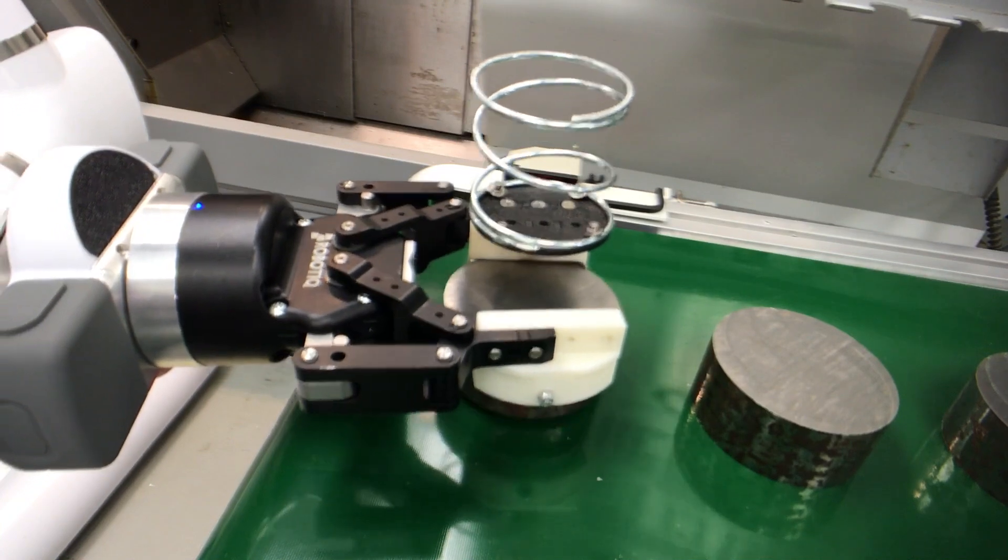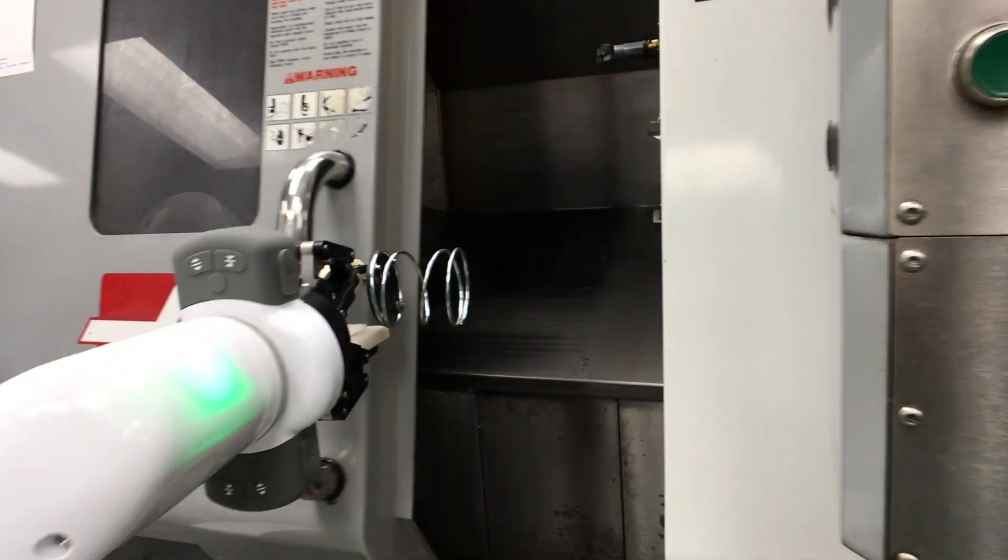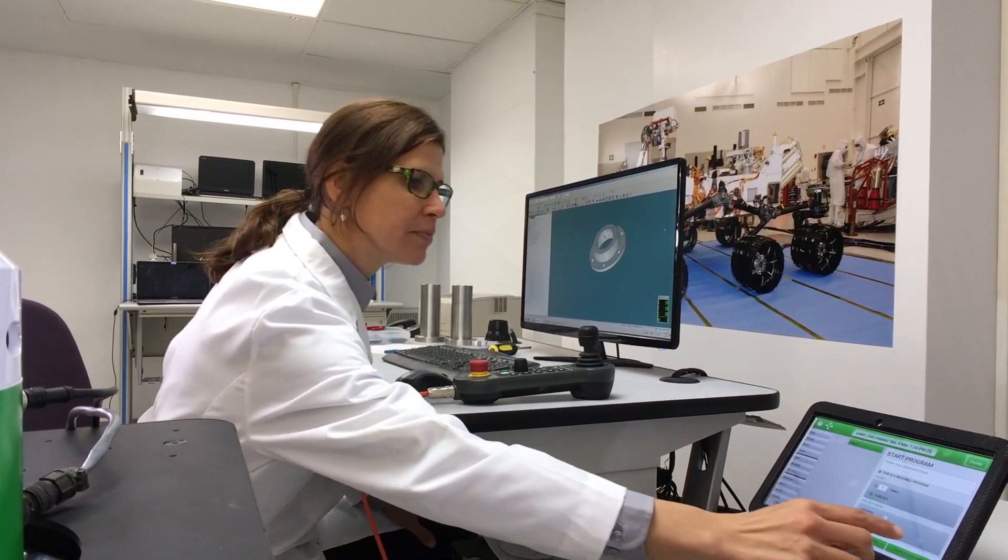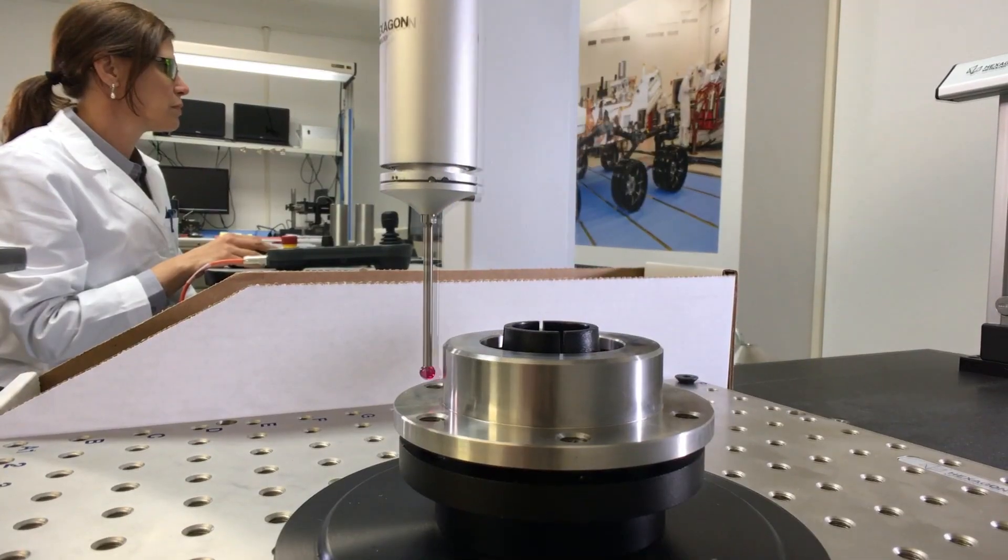OB7 can learn machine tending jobs like loading and unloading parts, opening and closing doors, and even pushing the start button. Jobs like precision QC measurement can be run, saved, and re-run when the next batch is ready.